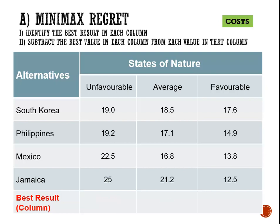For the average column we have 18.5 million, 17.1 million, 16.8 million, and 21.2 million. Because the figures are costs, we choose 16.8 million — the lowest cost. For our favorable column we have 17.6, 14.9, 13.8, and 12.5 million. We choose the lowest cost, which is 12.5 million dollars. That is step one: choose the best payoff for each state of nature.